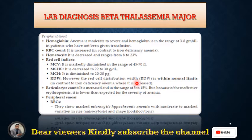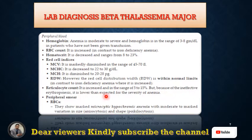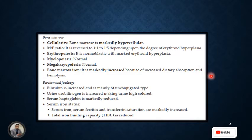Reticulocyte count is high at 5–15%, indicating bone marrow response and hemolytic anemia, but is lower than expected for the severity of anemia due to ineffective erythropoiesis. On peripheral blood smear, RBCs show markedly microcytic hypochromic changes with anisocytosis, poikilocytosis, teardrop cells, fragmented cells, target cells, and Heinz bodies.